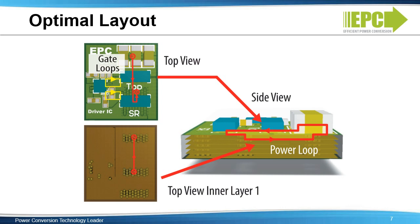The smallest power loop and gate loop inductance can be achieved by taking advantage of an inner PC board layer to form an optimized return path. The decoupling capacitors are placed close to the drain of the high side transistor. PC board vias are used to connect the ground terminal of the capacitors to the low side source by way of the first inner layer, where the dielectric thickness is intentionally kept thin to keep the inductances low. An example of this optimal layout technique is shown here.